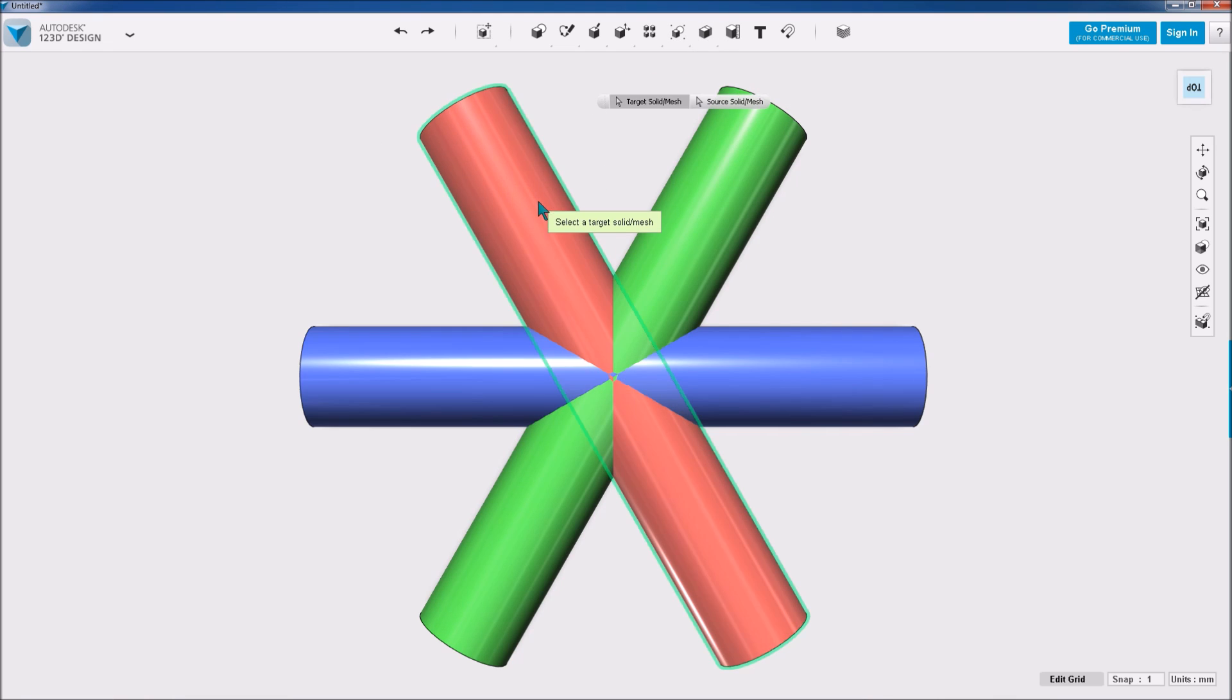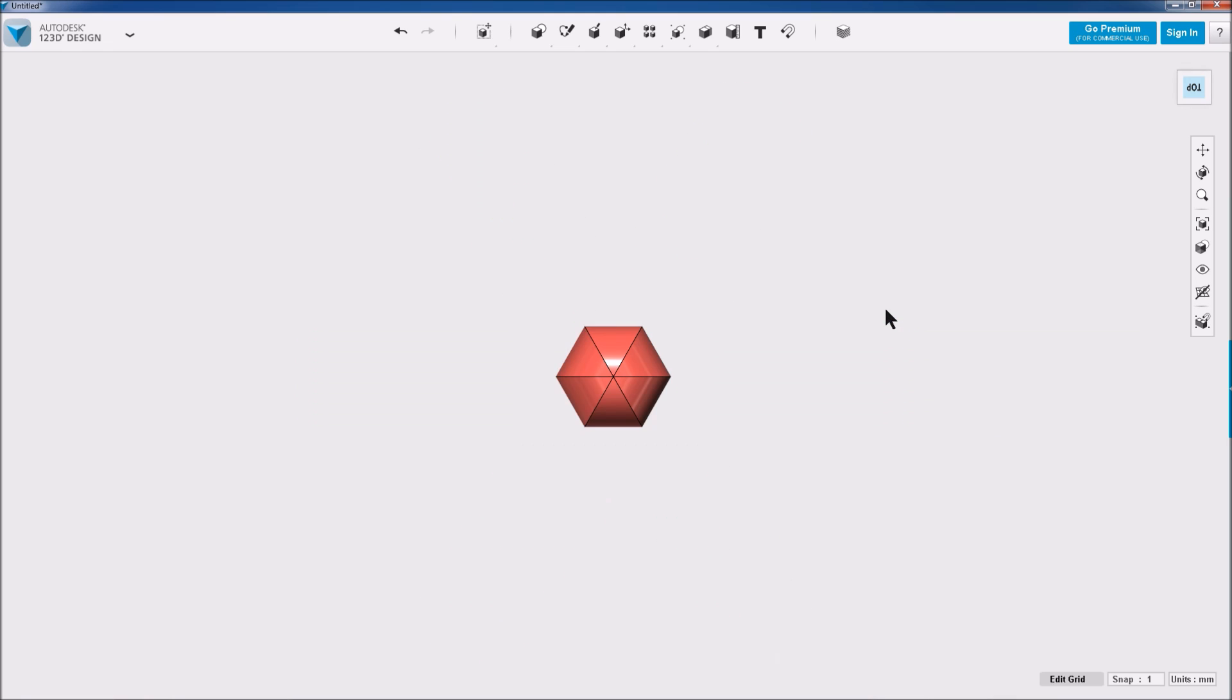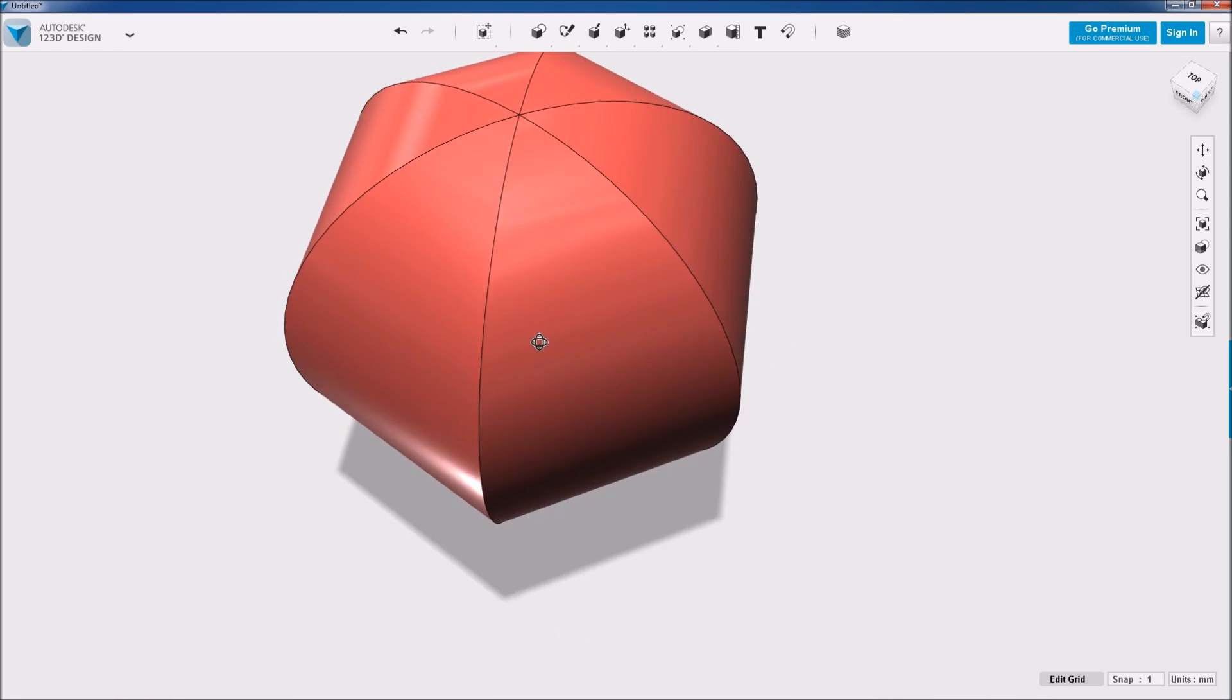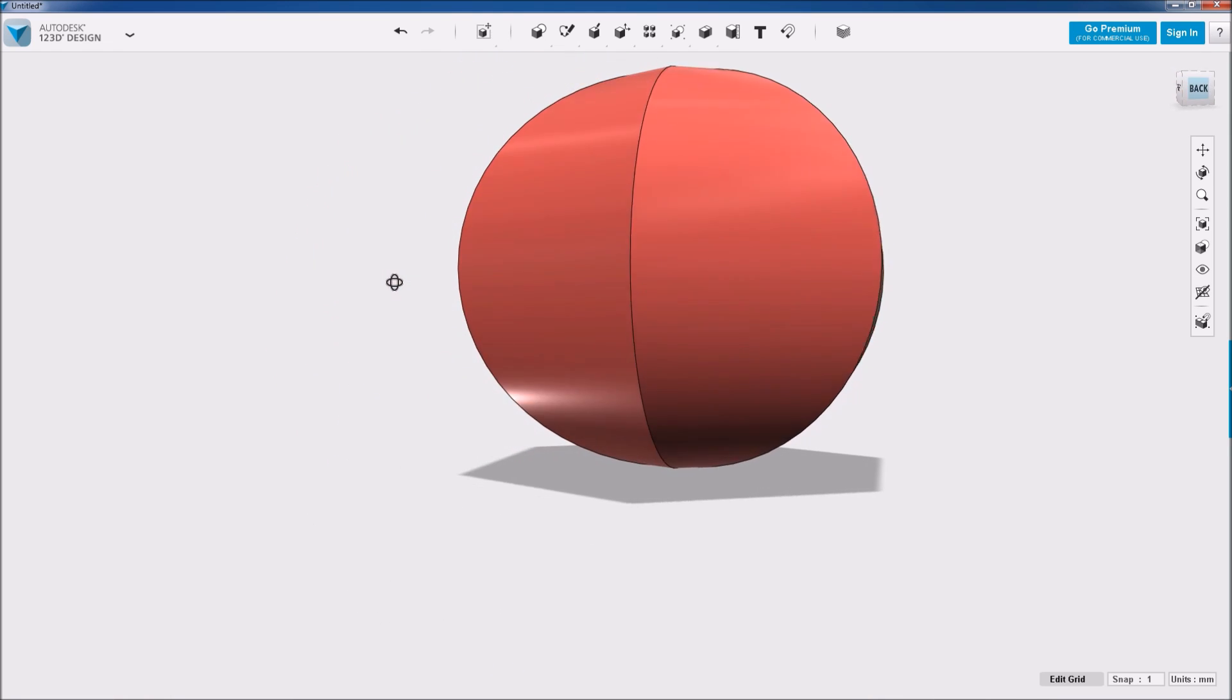The beach ball is hard to see at this point, so I run the intersect operation in my CAD software that removes everything that is not intersecting. Pretty straightforward. Now the beach ball should be much more apparent.